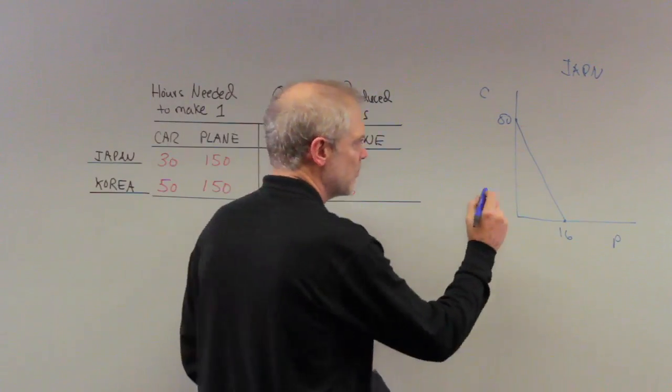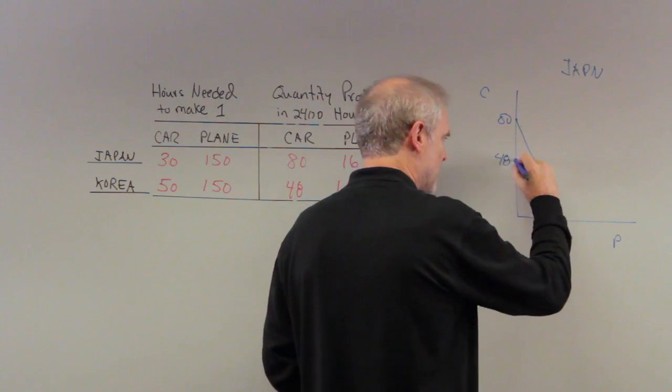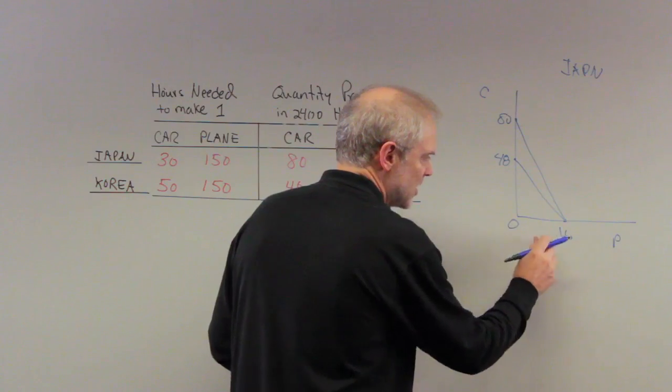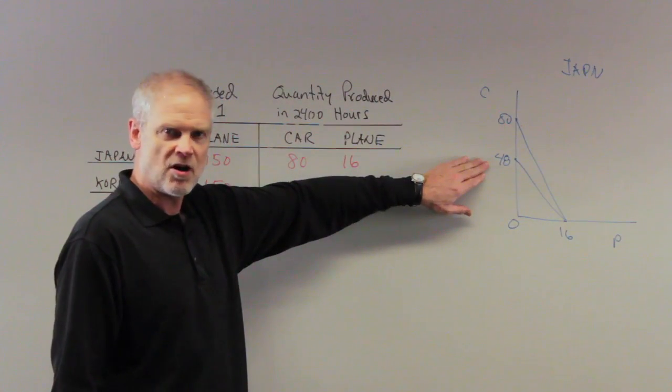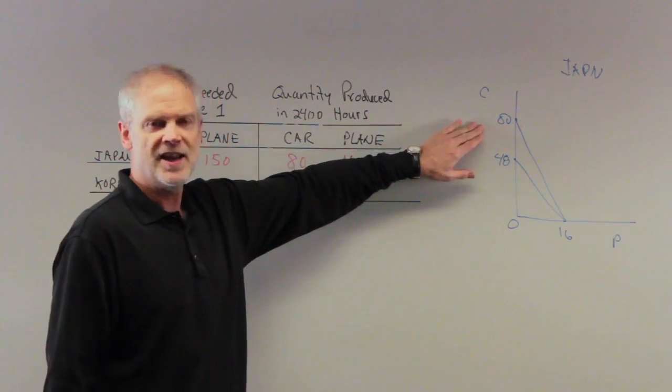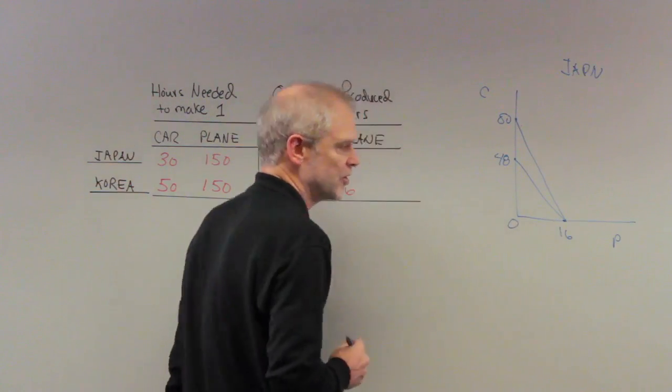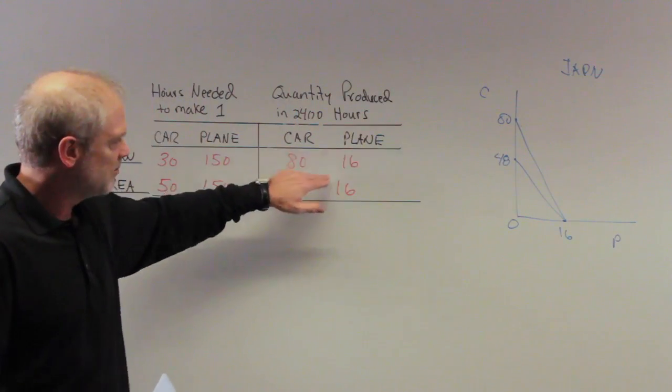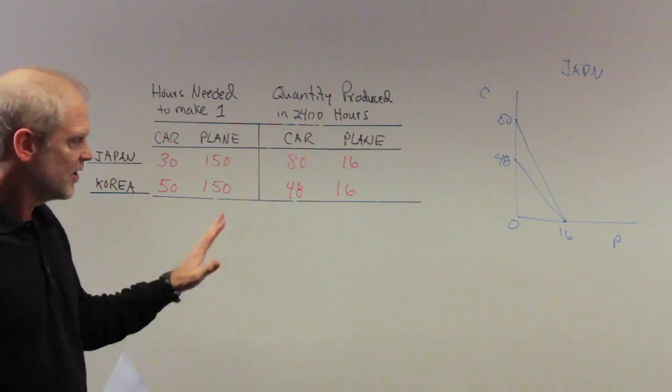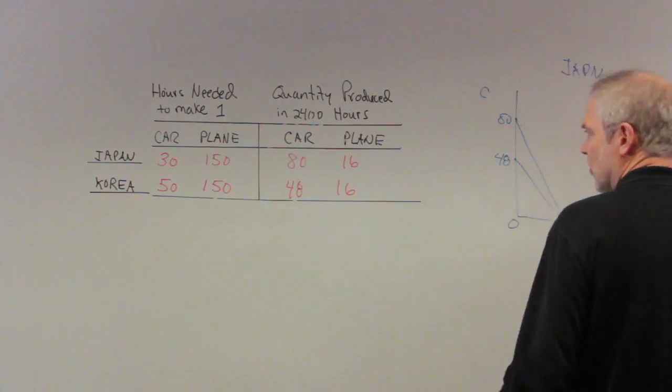Korea's would look more modest. It would have 48 right here as the amount, but then it would also go right down to here. In other words, if Korea devoted no time to the production of planes and all its labor to cars, it could produce 48. If Japan devoted all its labor to cars, it could produce 80. If both countries reversed and devoted all their labor to the production of planes, they could both get 16. Again, 2,400 divided by 150 gives you the 16. So this is the basic setup of the problem.